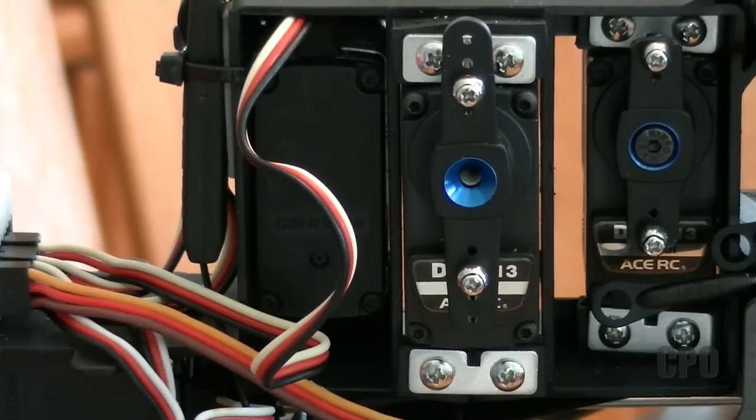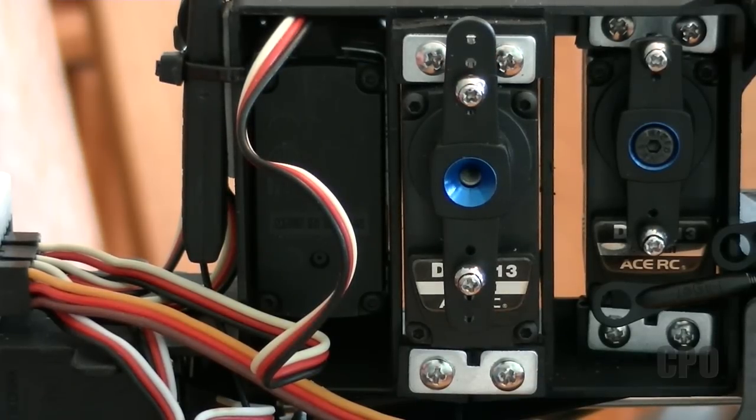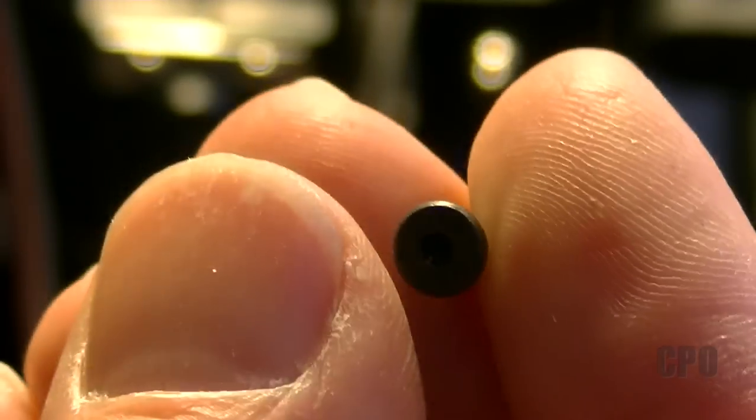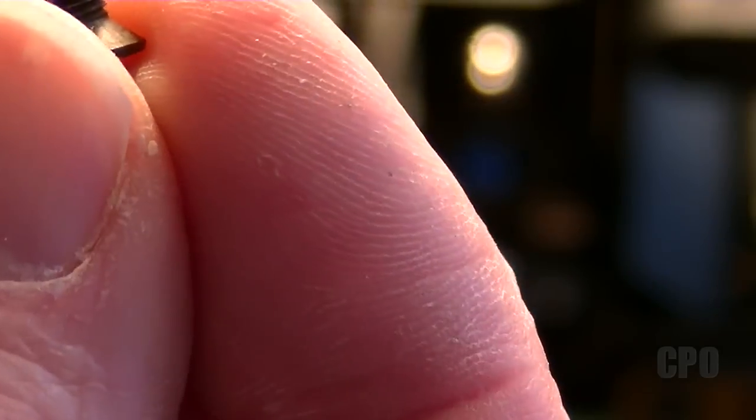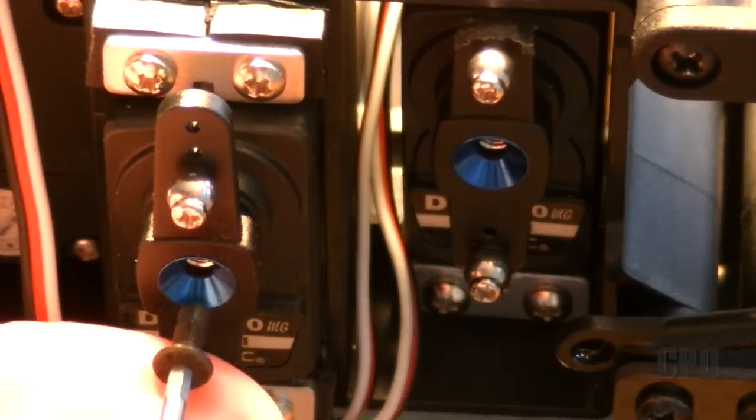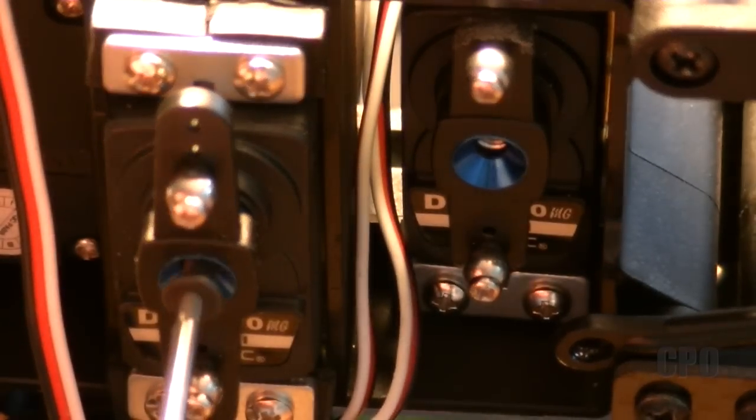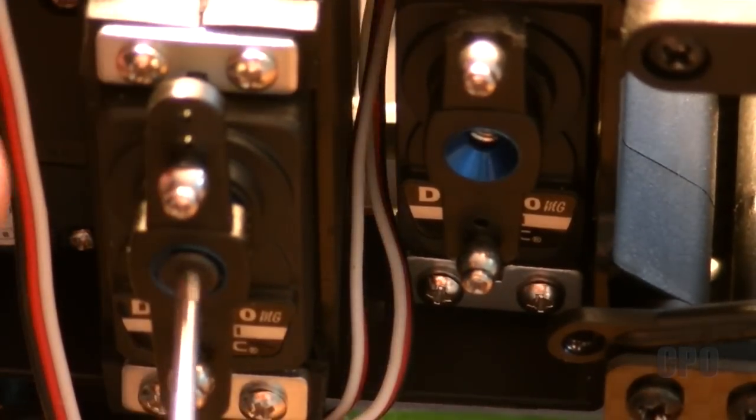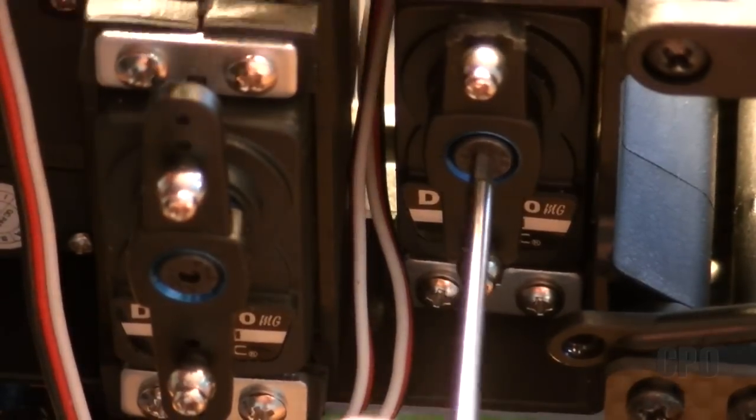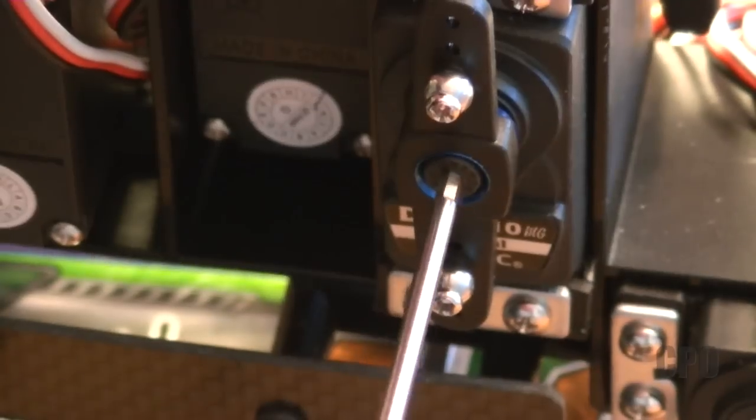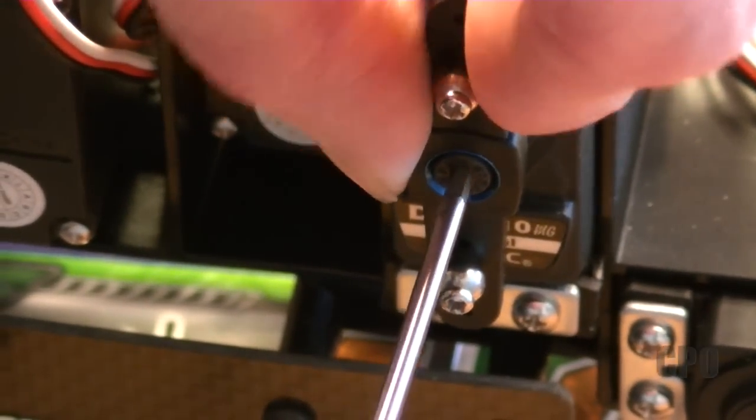You may try flipping the servo horn or even swapping it on different servos to get that perfect fit while the sub trim is still at zero. Get it as close as you can physically and mechanically and then fine tune it with the sub trim. But the less sub trim you use the better. Use the center screw here and don't forget to put some thread lock on that. When I tighten it I like to use my finger to hold the servo horn so I'm not torquing against the servo motors.